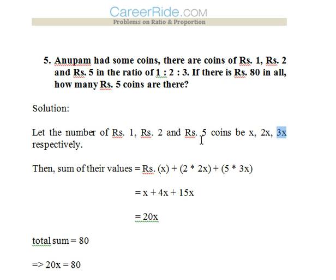Now what would be the sum of their value? There are x number of coins of rupees 1, so x into 1, that is x. There are 2x number of coins of rupees 2, so 2x into 2. There are 3x number of coins of rupees 5 denomination, so 5 into 3x.